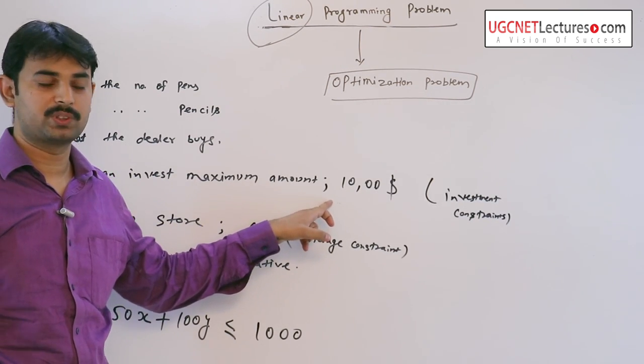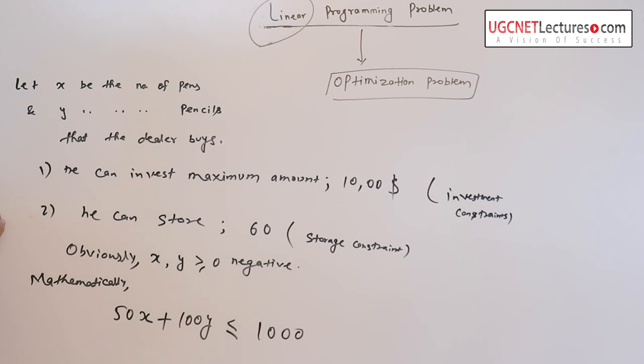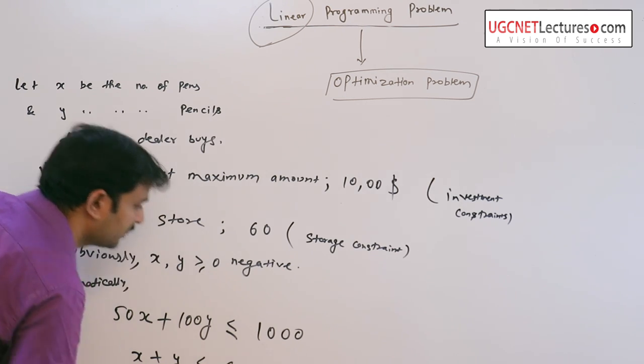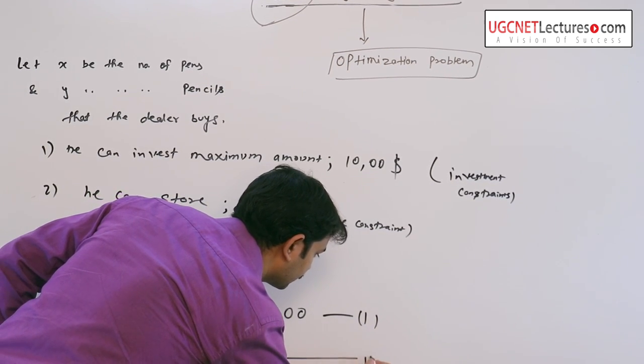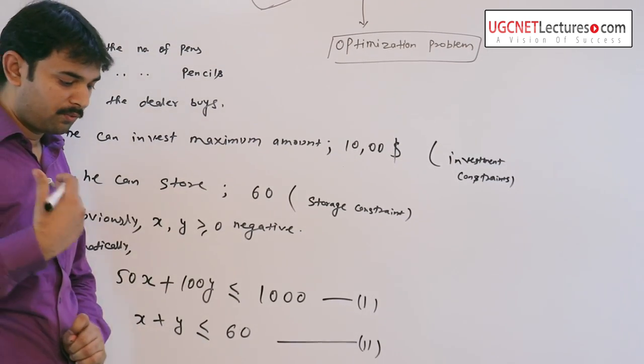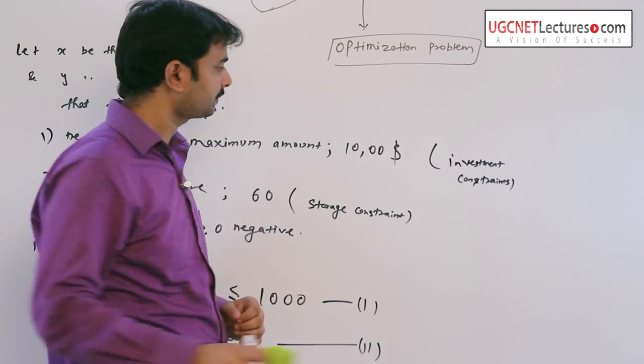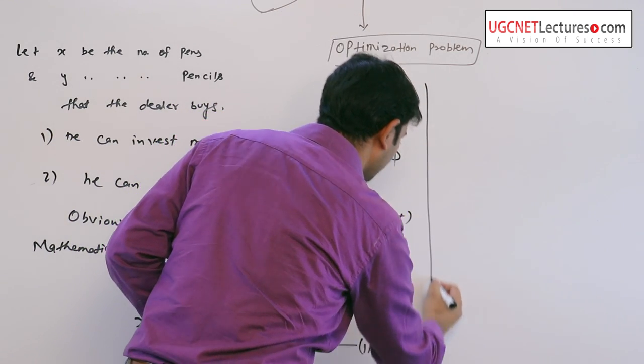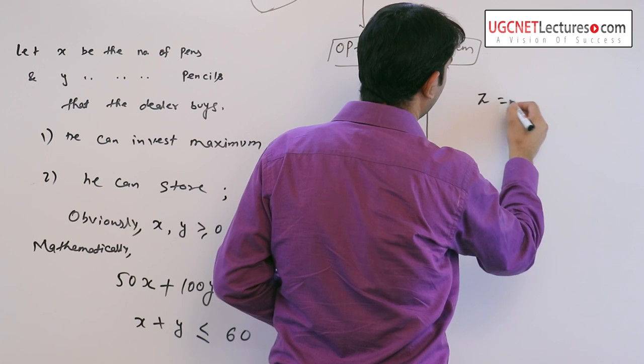He can invest maximum $1000 and the second one he can store items 60, so x plus y less than or equal to 60. So here the first constraint is 50x + 100y ≤ 1000 and the second constraint is x + y ≤ 60. Now the dealer wants to maximize his profit, say function z.